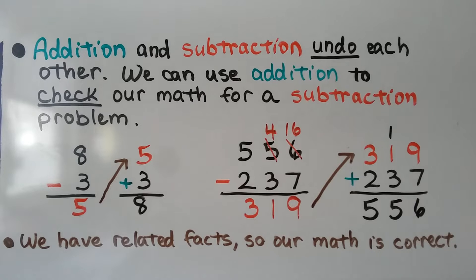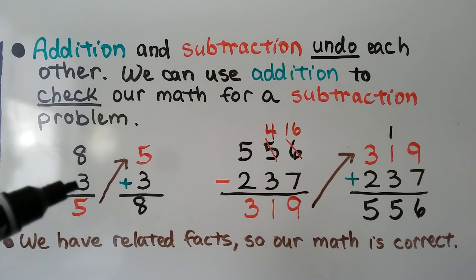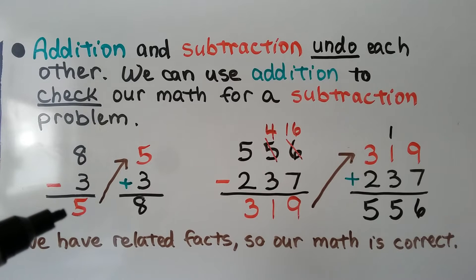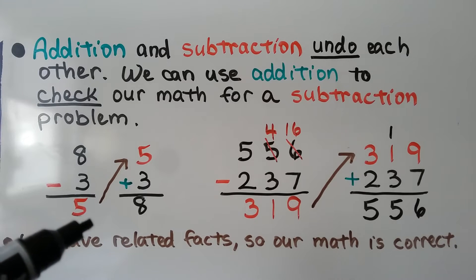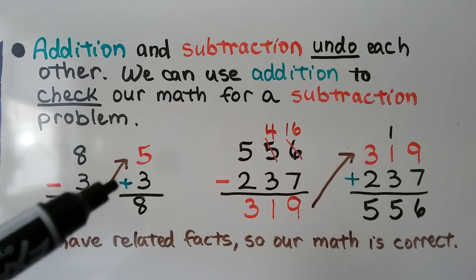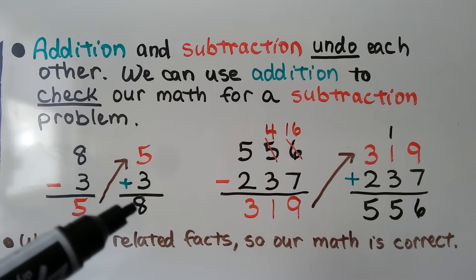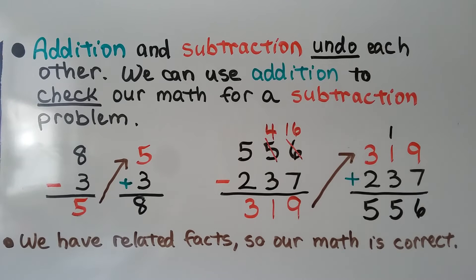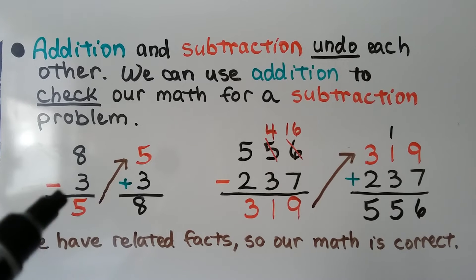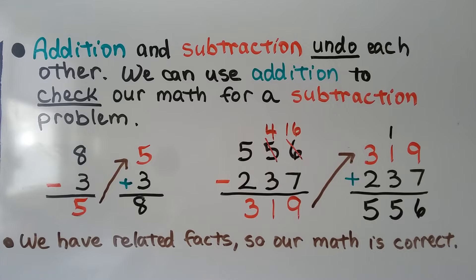Did you know that addition and subtraction undo each other? We can use addition to check our math for a subtraction problem. If we have 8 minus 3 and it's equal to 5, we can use 5 plus 3 is equal to 8 to check our answer. This is correct, so we know we did our subtraction correctly. We have related facts, so our math is correct.